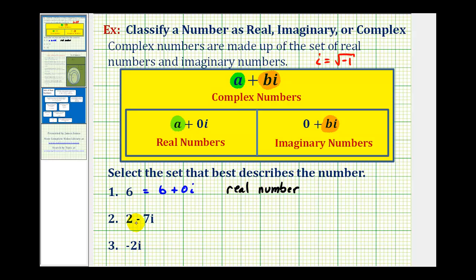Next, we have 2 minus 7i. Notice how for this, we have a real part and an imaginary part, so the set that best describes this number is that it is a complex number.